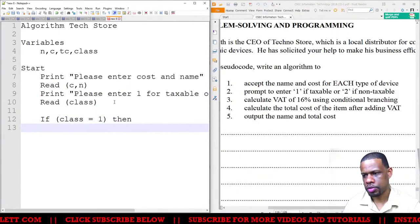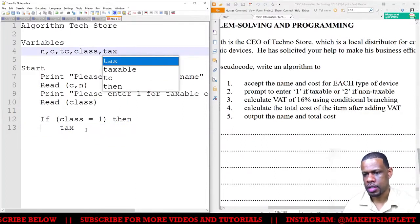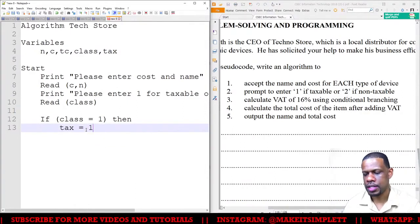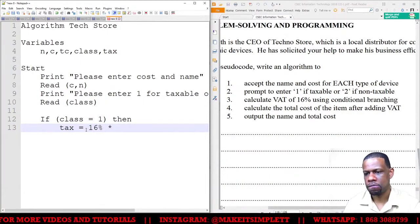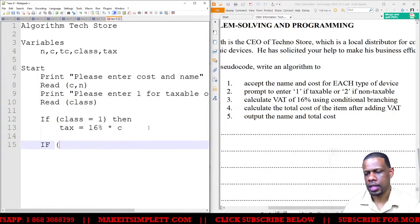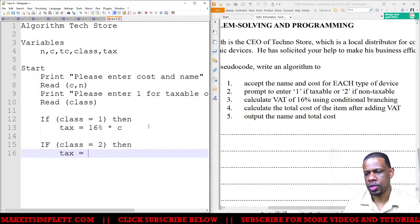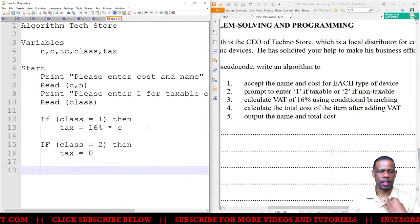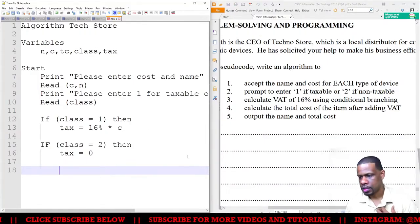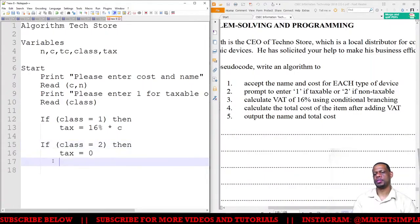We'll have a variable called tax now. Tax is equal to 16 multiplied by cost, which is c. And I'll say if class is equal to 2, then tax is equal to zero. So basically I'm just saying if tax is equal to 2, then it's equal to zero.